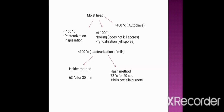Here is a brief overview of moist heat sterilization. It is categorized into three groups: less than 100 degrees centigrade, at 100 degrees centigrade, and above 100 degrees centigrade. Below 100 degrees centigrade, there are two methods: pasteurization and inspissation. Pasteurization of milk below 100 degrees centigrade is further divided into two methods: the holder method and the flash method of pasteurization.